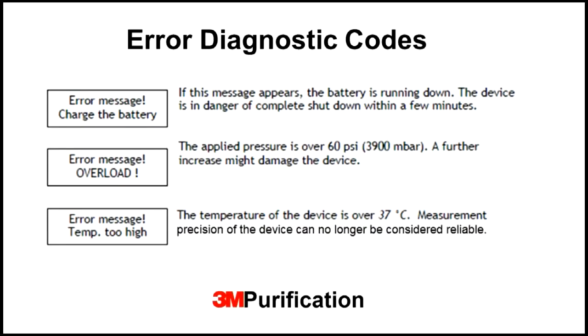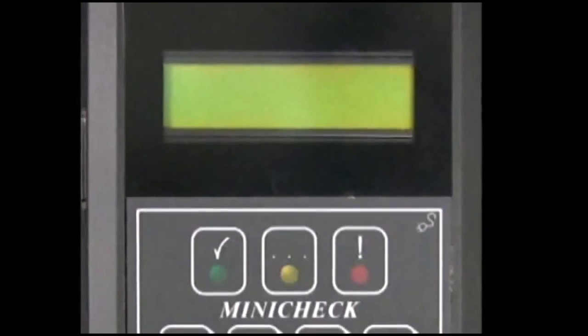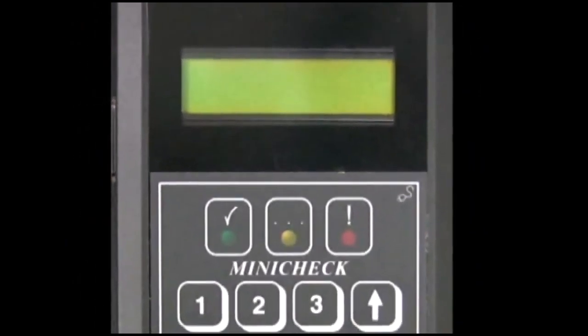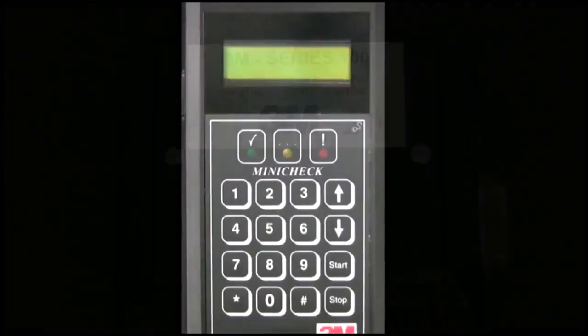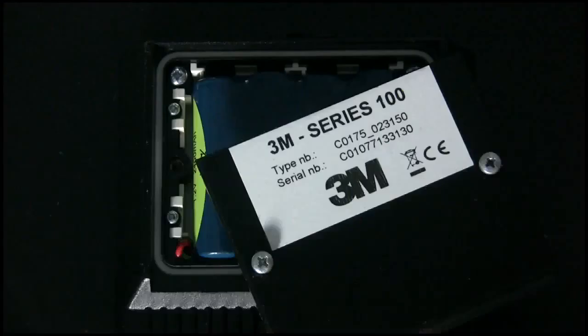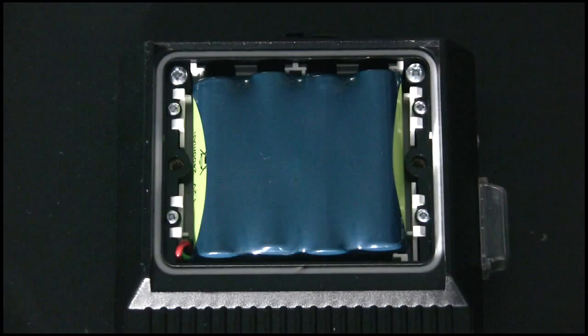Following are typical error diagnostic codes that may display on the device and an explanation of each. The first message is an indication that the battery life is low. In the event this message appears, the device should immediately be connected to AC power and/or charged. In the event the device does not activate when connected to AC power or fully charged, the battery supplied with the device may be exhausted. The battery typically lasts two years. The battery can be accessed and replaced by removing the battery panel on the back of the device. Because of the complexity of the wiring involved, it's recommended to contact 3M Purification Technical Support to complete the task of battery pack replacement.